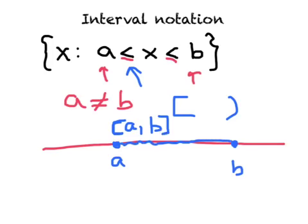And this is our interval notation for this set right here. All the x's between A and B, that's a closed interval, the closed interval from A to B. So square brackets on both sides.